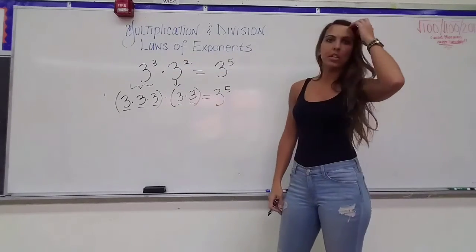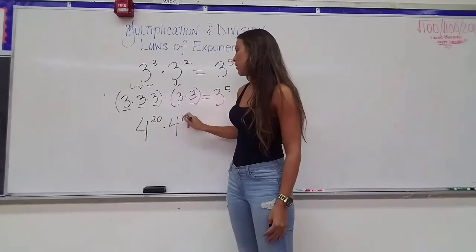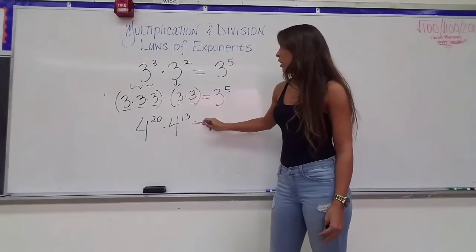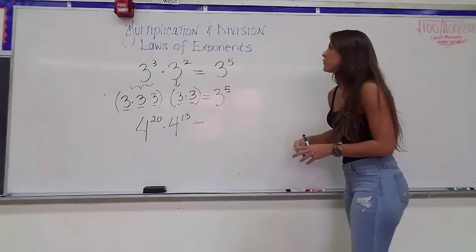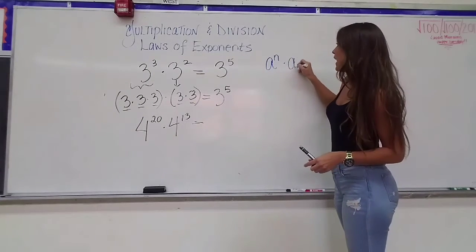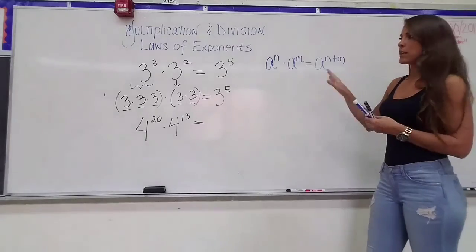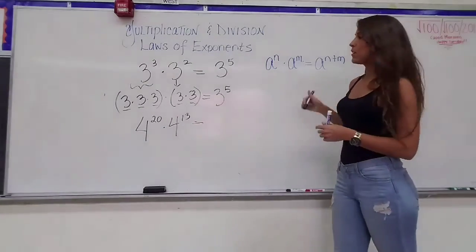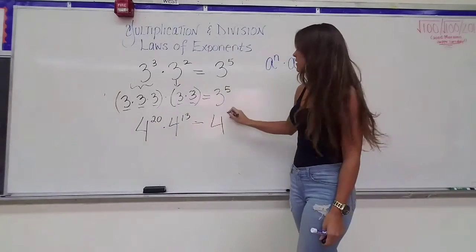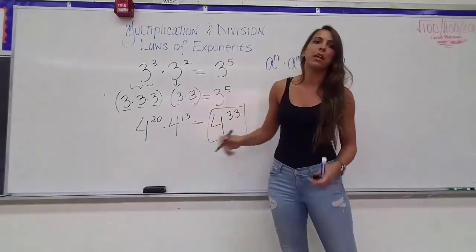The multiplication law is useful because if you had an expression like 4 to the 20th multiplied by 4 to the 13th, we don't want to draw out 20 fours and 13 fours. So we follow our law: a to the n power multiplied by a to the m power equals a to the n plus m power. Our base stays the same — 4 — and our exponents 20 and 13 are added to get 33. So 4 to the 33rd is the simplified version of 4 to the 20th multiplied by 4 to the 13th.